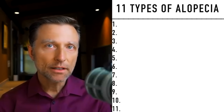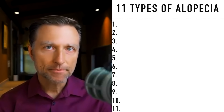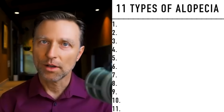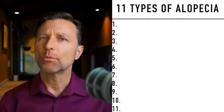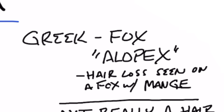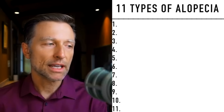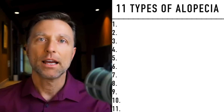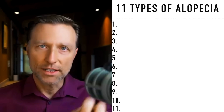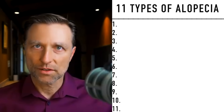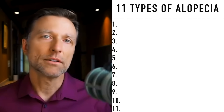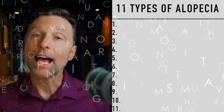Today we're going to talk about the 11 types of alopecia. What does the word alopecia mean? It comes from a Greek word, alopex, which means fox. The reason they reference a fox is that certain foxes get an infection with mites and start losing their hair in different patches. That's the origin of the word alopecia.